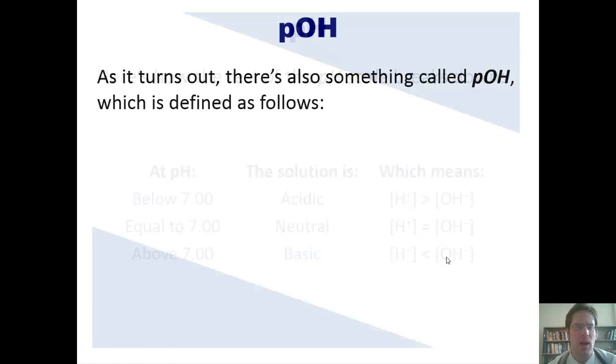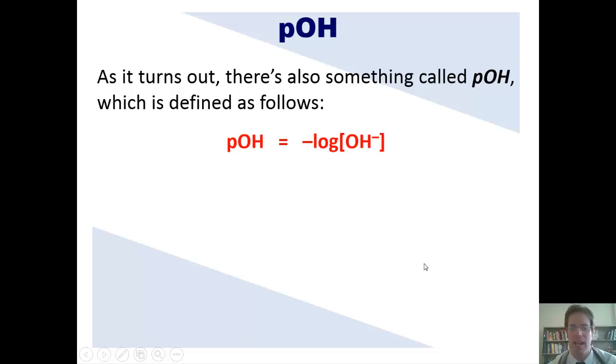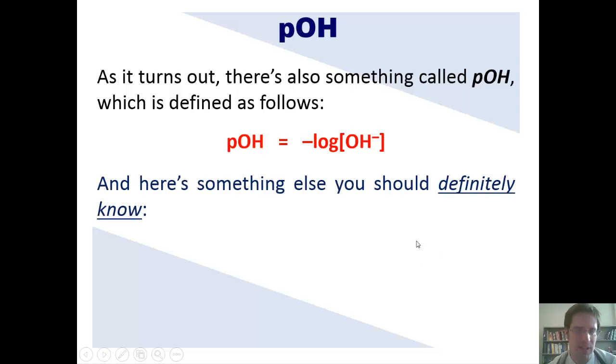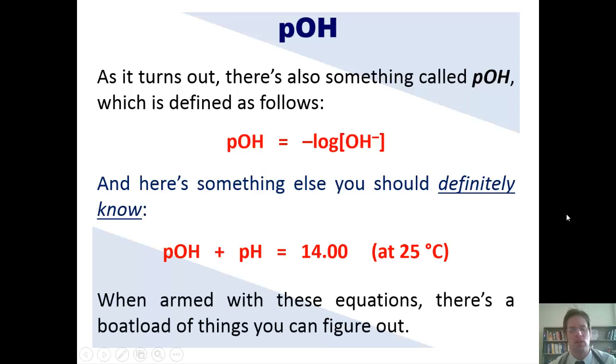Now, as it turns out, there's also something called pOH, which is defined as follows. pOH is equal to negative log concentration of hydroxide. And here's something else you should definitely know. Please, my students, memorize this. pH plus pOH is always equal to 14 at 25 degrees Celsius. When you're armed with these equations, there's a buttload of things you can figure out, as I'll show you now with a wonderful example problem.